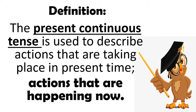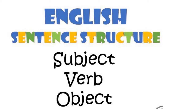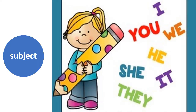Before starting the lecture, you need to revise sentence structure. For making any sentence, we need a subject, a verb, and an object. The subject is the doer of the sentence, the verb is an action word, and the object receives the action. The subject could be I, we, you, they, he, she, it, or any proper noun, and can be singular or plural.